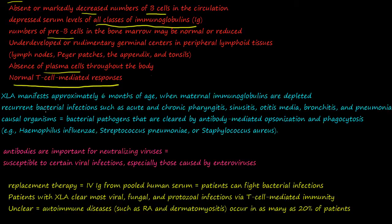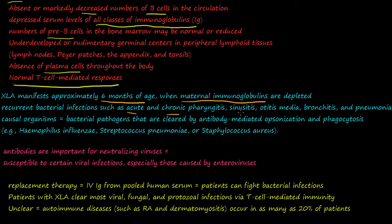XLA manifests approximately six months after birth, because maternal immunoglobulins initially protect the newborn. Once those maternal immunoglobulins become depleted, recurring bacterial infections such as acute and chronic pharyngitis, sinusitis, ear infections (otitis media), bronchitis, and pneumonia become common. The causative bacterial pathogens are normally cleared by antibody-mediated opsonization and phagocytosis.